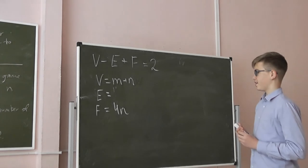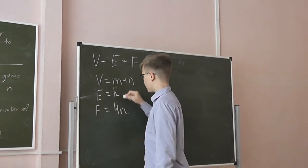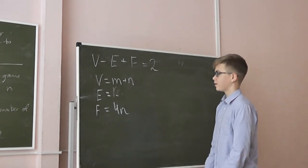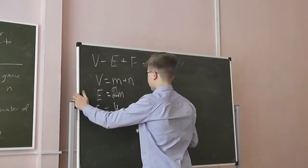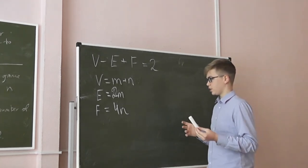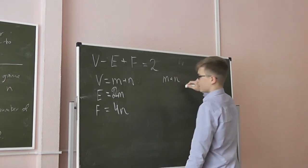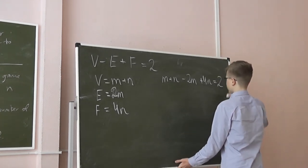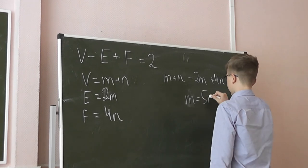And the edges equal? Two M. Yes. Because every step we add two edges. Okay. So we can write that M plus N minus 2M plus 4N is equal to 2. So, 5M is equal to 5N minus 2.